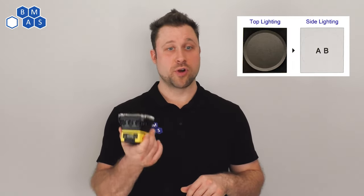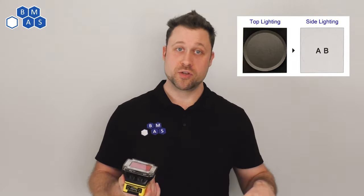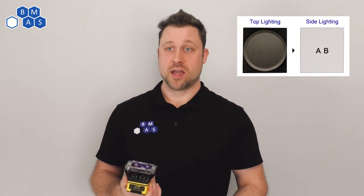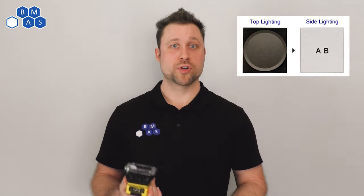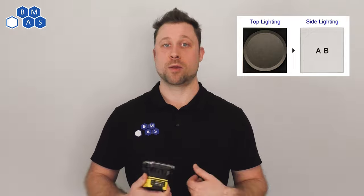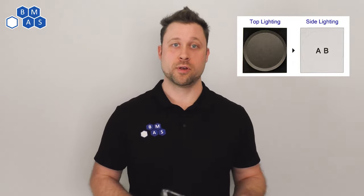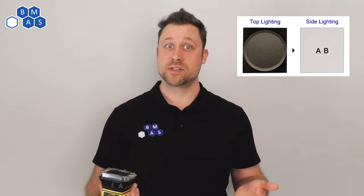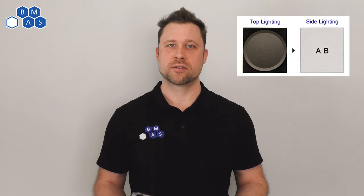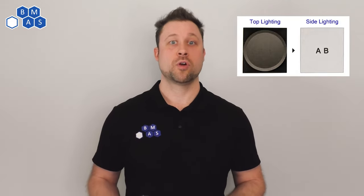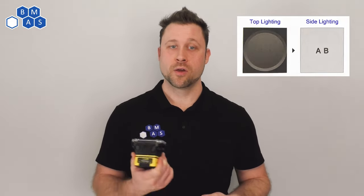One more good example is if we're trying to measure a 3D component to a part, say it has an embossed portion or features sticking up and we want to make sure they're there or measure them or make sure they're the right shape. Then we might want to light from the side because that really enhances, it adds a lot of contrast to those surface features or to a texture. So that's lighting.